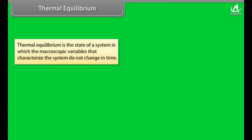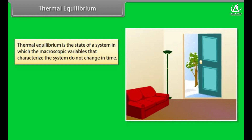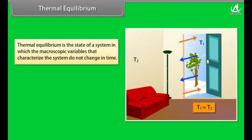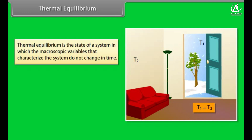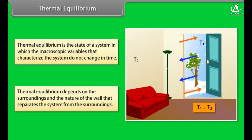Thermal equilibrium is the state of a system in which the macroscopic variables that characterize the system do not change in time. For example, in winter, when you open the door of your house, heat moves out. After a few minutes, the temperature inside and outside becomes the same — this is due to thermal equilibrium. Thermal equilibrium depends on the surroundings and the nature of the wall separating the system from the surroundings.